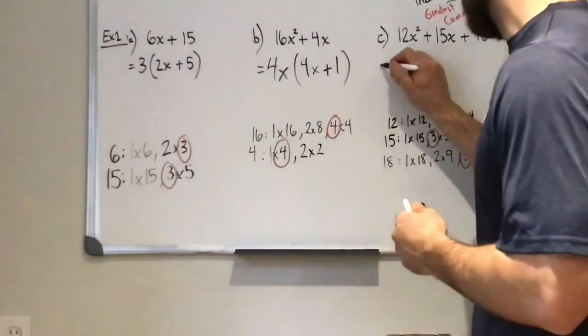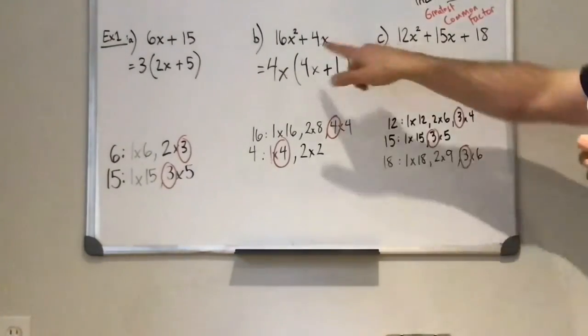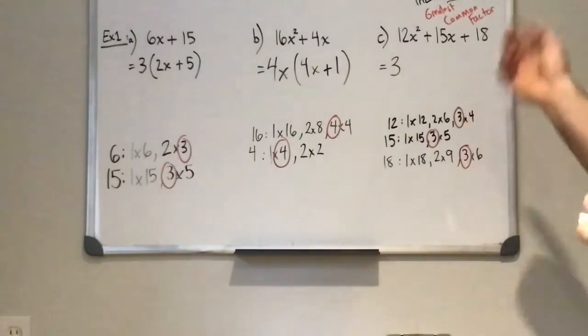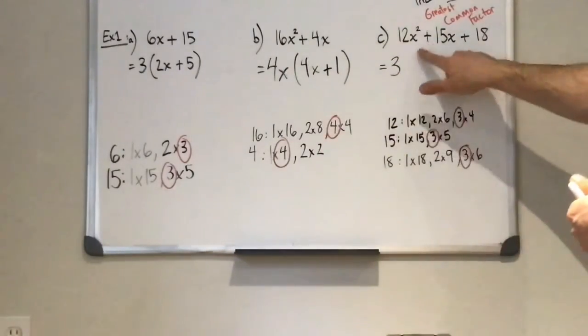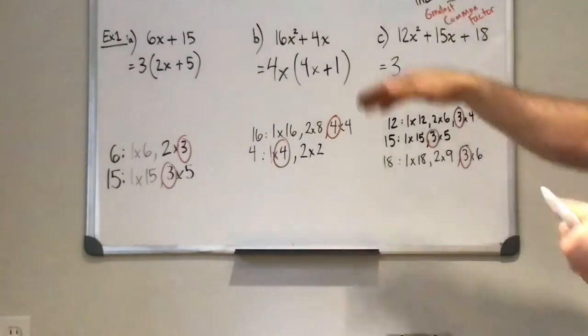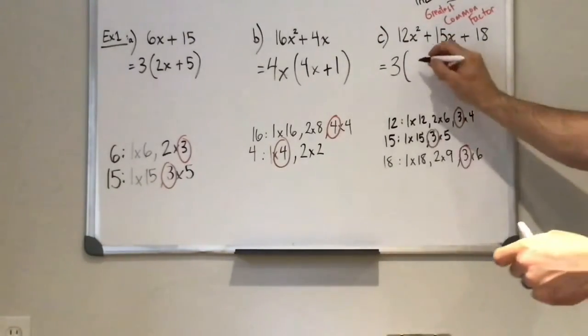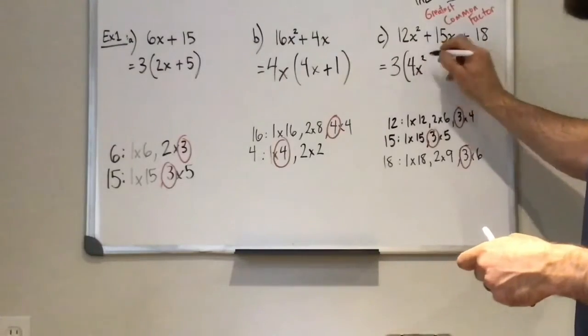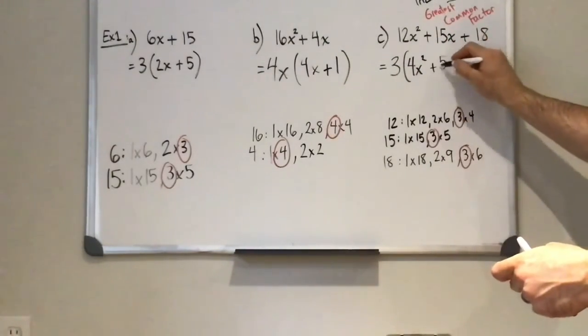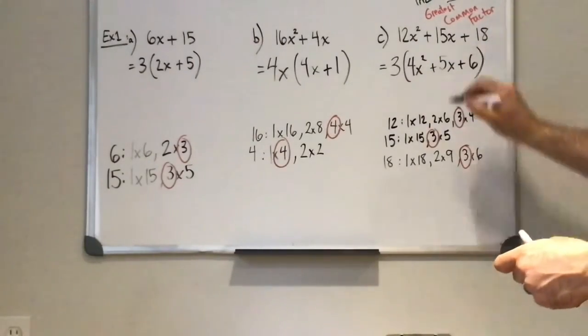So what we can do now is divide out of 3. Now, in this previous example, there was an x, at least one x in both terms. So we can take out an x. So we can take out an x. That third term is missing an x, so I can't take an x out of the other two. So we can only take a number of 12 divided by 3 is 4x squared. 15 divided by 3 is 5x, 18 divided by 3 is 6.